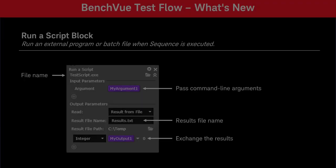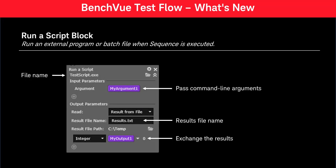Next, we have added a new block type which enables TestFlow to run an external program or batch file when the sequence is executed. With the Run a Script block, you can pass command line arguments and exchange results using TestFlow variables.